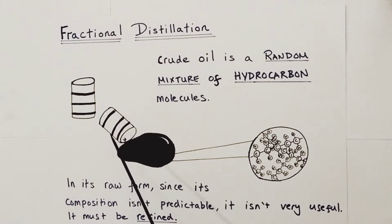Here's a barrel of crude oil pouring out its contents onto the floor. If I were to zoom into that liquid and look at it at a molecular level, I'd see something like this, revealing that crude oil is a random mixture of hydrocarbon molecules.